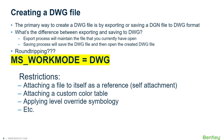You can use the variable MS_WORKMODE and set it equal to DWG. This work mode is set up automatically when working in a DWG file, but you can also set this variable for working in your DGN files. This will apply restrictions that will not allow you to do things that are standardly available in DGN format. Some of these restrictions include attaching a reference to itself — since there's no self-attachment in AutoCAD — attaching a custom color table, and applying level override symbology, just to name a few. Be mindful that you can set that variable to protect yourself and the integrity of your data.